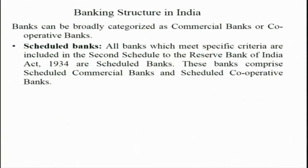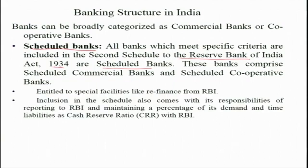Coming to the banking structure in India, banks can be broadly categorized as commercial banks or cooperative banks. Within that, there is another broad categorization — scheduled banks and non-scheduled banks. All banks which meet specific criteria are included in the second schedule to the RBI Act 1934, and these are called scheduled banks. These banks comprise scheduled commercial banks and scheduled cooperative banks.